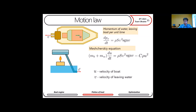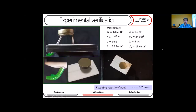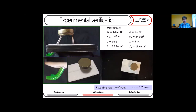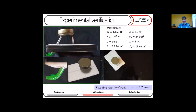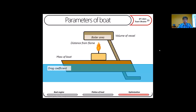Now we can move to the motion law for our boat. The boat's motion is reactive, so we can use the Meshchersky equation, where we take into account the mass of the boat and the ejected water which changes, as well as the momentum of water and the drag force. For our parameters we find the velocity, and we observe that velocity saturates. To verify this, we built an experimental boat with these parameters, and using video tracking analysis we obtained a result for velocity which agrees well with our theory.